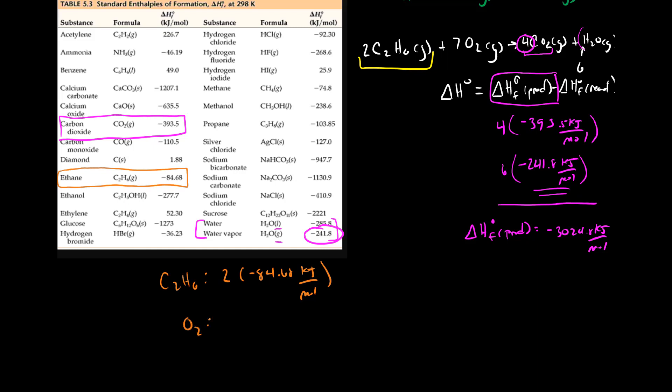So our O2's are seven times zero. If we add these two values up then we're going to get two times negative 84.68 which gives us negative 169.36 kilojoules per mole.